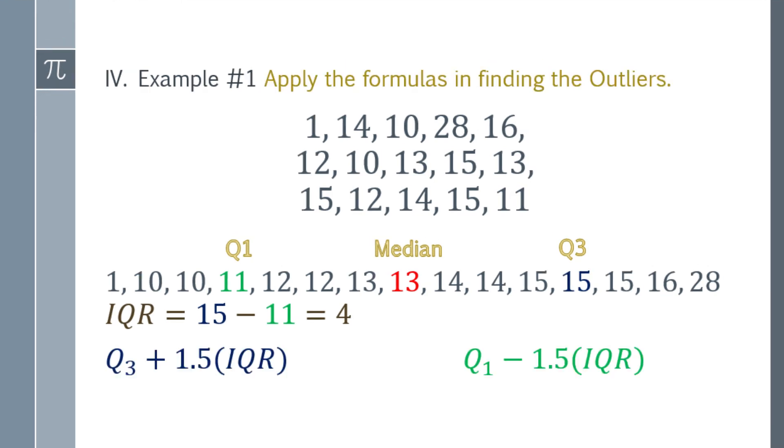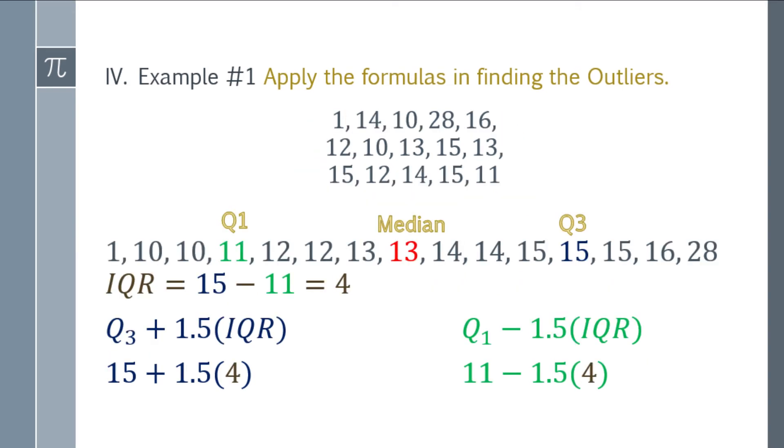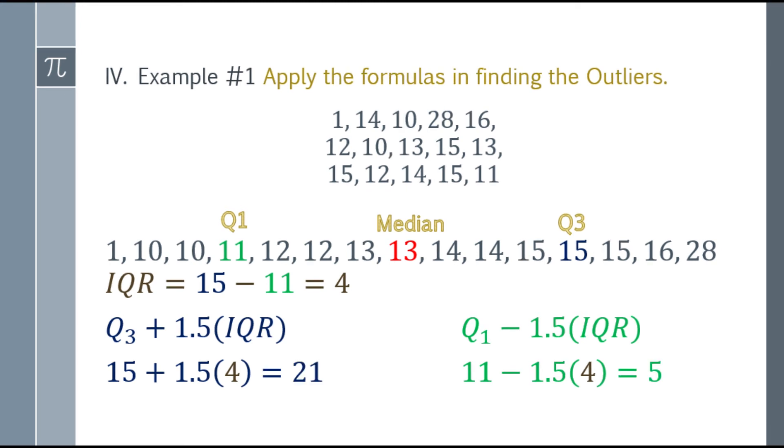Now we're going to apply the formulas and finding the outliers. The first one, yung greater than, yung sa Q3. Q3 plus mo ng 1.5 times the quantity IQR. At yung sa less than, Q1 minus the quantity 1.5 times IQR. So substitute natin. That will be Q3 is 15, plus mo ng 1.5 times mo ng quantity 1.5 times mo ng 4. Kasi ito yung IQR is 4. Next one, Q1 naman, that's Q1 is 11, 11 minus mo ng quantity 1.5 times mo ng quantity 4. So simplify natin siya. The answer for the greater than is 21, at yung sa less naman will be 5.